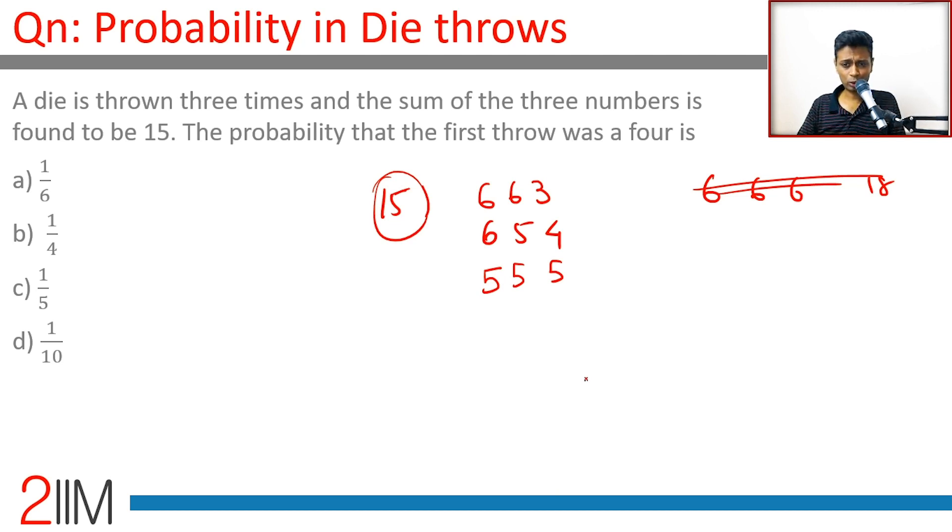Once you have done this, we are through. Below 5, 5, 5 we cannot have. One of the throws has to be 6. If none of the throws is 6, there's only one possibility: 5, 5, 5. If one of the throws is 6, it is 6, 6, 3 or 6, 5, 4.